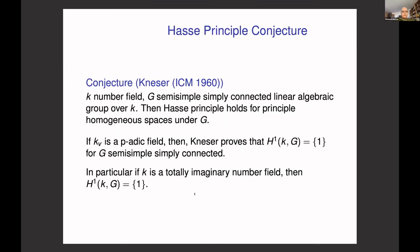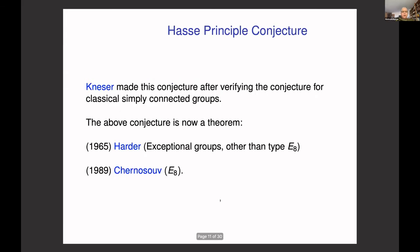So Kneser made this conjecture in his 1960 plenary talk: K is a number field, G is a semi-simple simply connected linear algebraic group defined over K, then the Hasse principle holds for principal homogeneous spaces under G. Since K_v is a p-adic field, Kneser proves that H¹(K_v, G) is trivial for a p-adic field, and hence the condition once again reduces to real places. In particular, if K is a totally imaginary number field, then every principal homogeneous space under G is trivial. Kneser made this conjecture after verifying it for classical simply connected groups, and the conjecture is now a theorem.